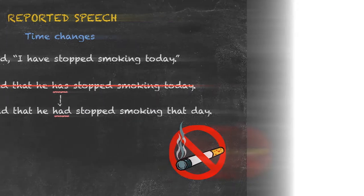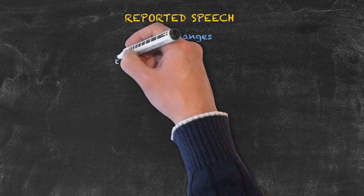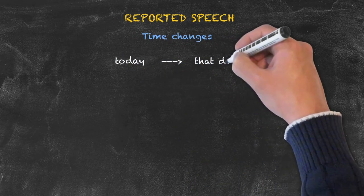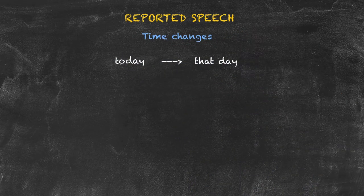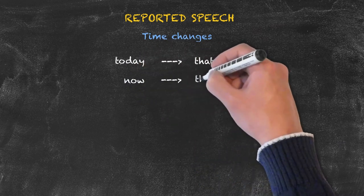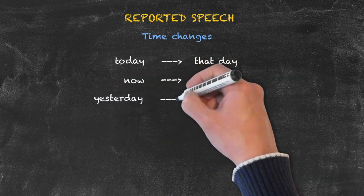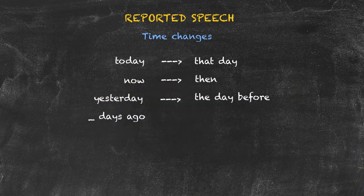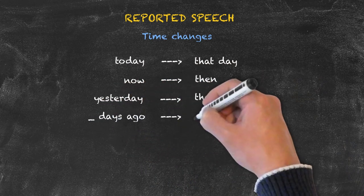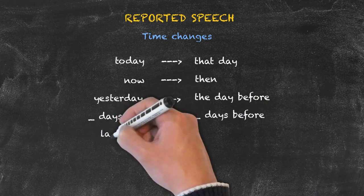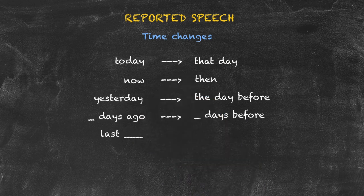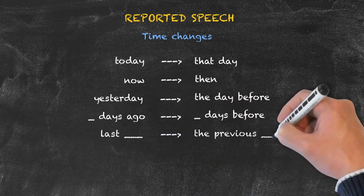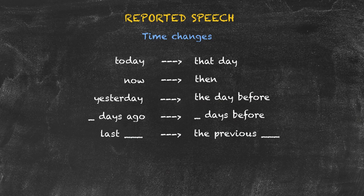Here now is a list of the additional time changes. We have 'today' going to 'that day,' 'now' to 'then,' 'yesterday' to 'the day before,' 'X days ago' to 'X days before,' and 'last week,' 'last month,' 'last year' going to 'the previous week, month, or year.'